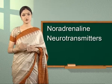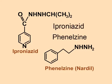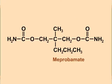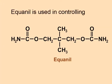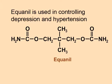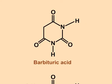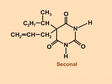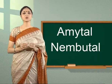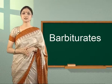Depression is reduced. Two important antidepressant drugs are iproniazid and phenelzine. Chlordiazepoxide and meprobamate are relatively mild tranquilizers used for relieving tension. Equinil is used in controlling depression and hypertension. Some other substances used as tranquilizers are valium and serotonin. Barbituric acid and its 5,5-disubstituted derivatives such as veronal, luminal, seconal, ametal and nembutal constitute an important class of tranquilizers called barbiturates. They are used as hypnotic, sleep-producing agents.